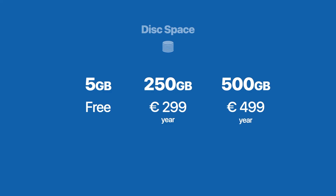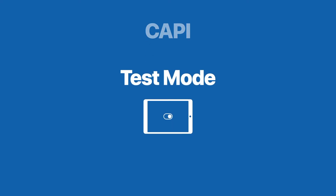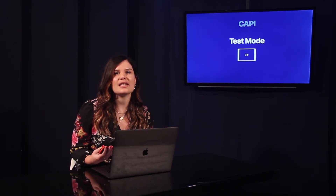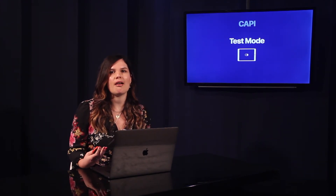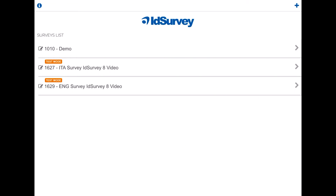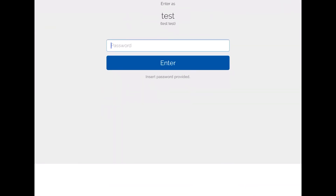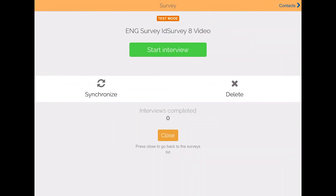Let's move now to the new CAPI methodology. With ID Survey 8, you can finally use the test mode on the CAPI app. By activating test mode, agents can download the survey and test the questionnaire without affecting the licenses and without messing the real data. Thanks to the colored bar, the agent will clearly know that they are working in test mode.